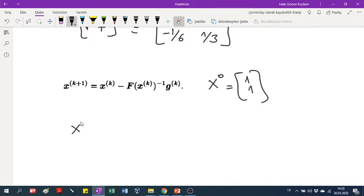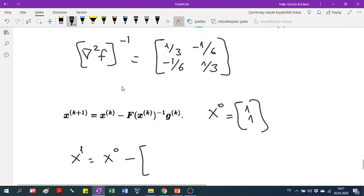And our x1 point by using this formula will be x0 minus our inverse of the Hessian. We write it here: 1/3, minus 1/6, minus 1/6 and 1/3 times the gradient.